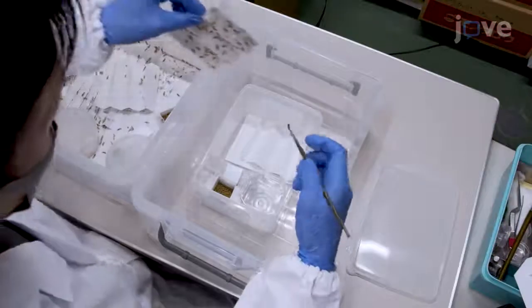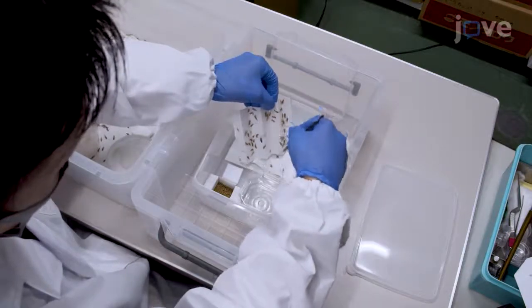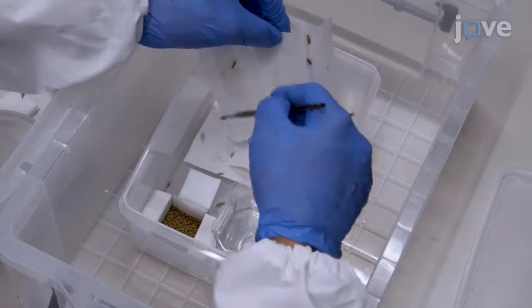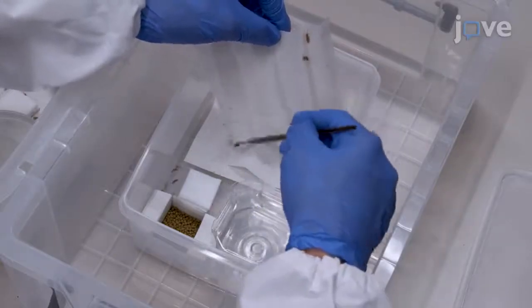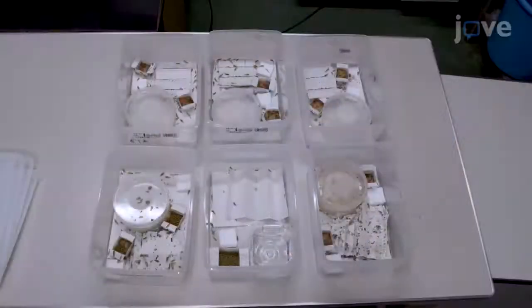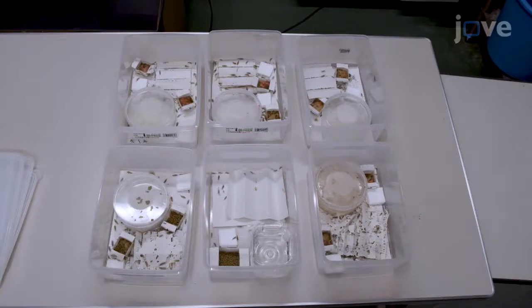To prepare the egg collection colonies, transfer about 20 male and 20 female adults to a middle-sized container with food, a water supply, a folded paper, and a small piece of layered cotton for egg laying. Set up several colonies to obtain a large number of staged embryos within a short time period.